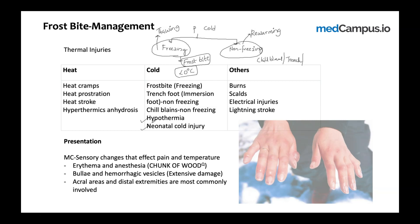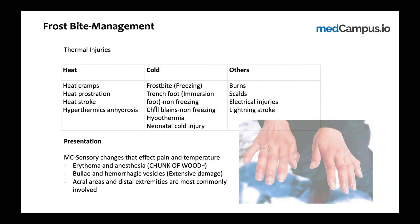The take-home point is: frostbite is a freezing peripheral cold injury which requires immediate thawing. The question asks about the temperature at which thawing is done — we will return to that. Other thermal injuries include burns, scalds, electrical injuries, and lightning strokes, which are discussed in forensic medicine.